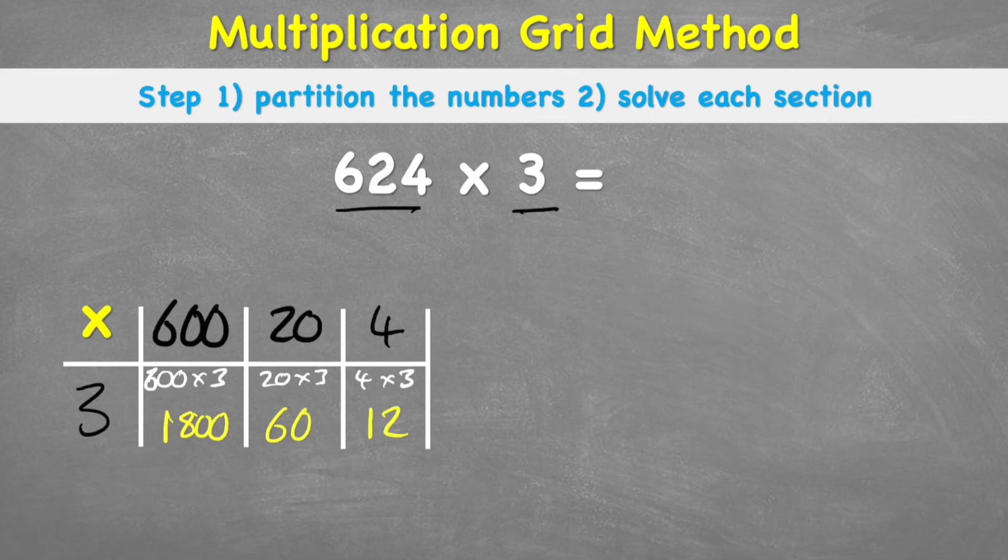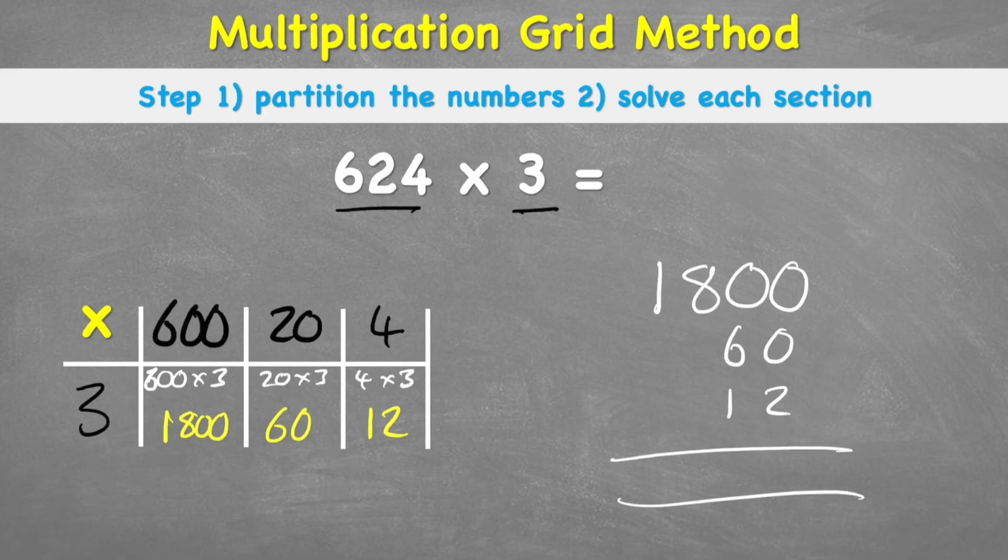Now remember, I partitioned my question. So now I need to put it back together. So it's 1,800 plus 60 plus 12. Look in the ones column first of all, I have a 2. Look in the tens column, I have a 7. Look in my hundreds, I have just an 8 and a 1 in the thousands. My final answer, 1,872.